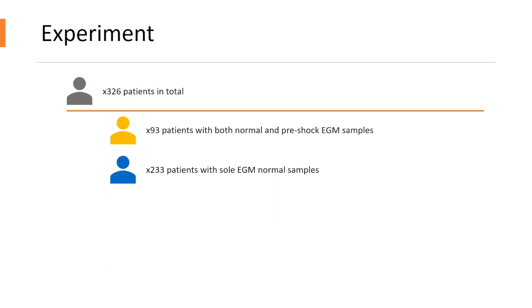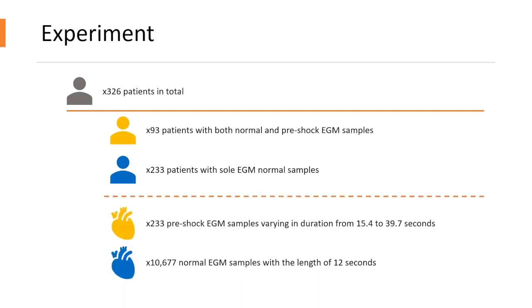The rest, amounting to 233 patients, only had normal EGM readings to share. Altogether, we amassed a total of 10,677 normal EGM readings and 233 pre-shock readings, clearly showcasing the considerable disparity in numbers between the normal and pre-shock data.